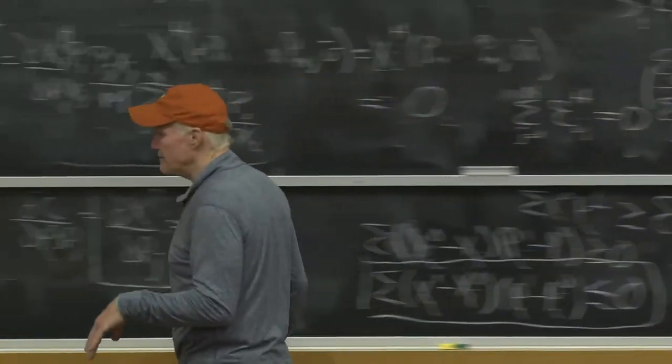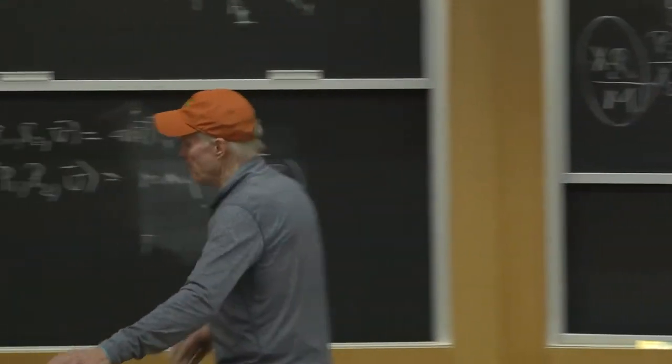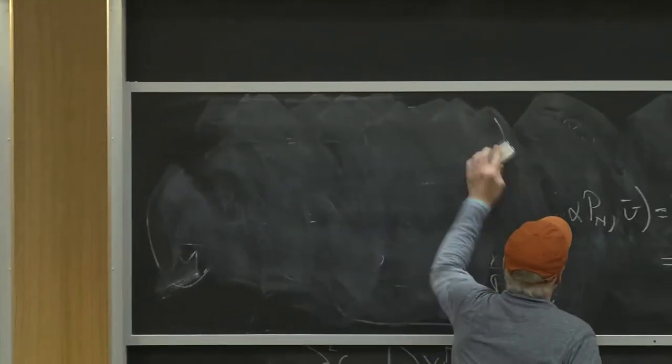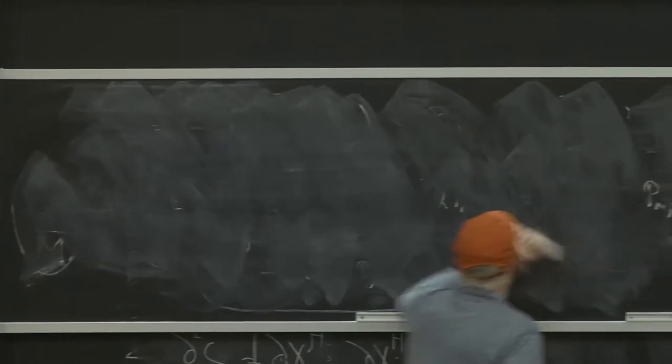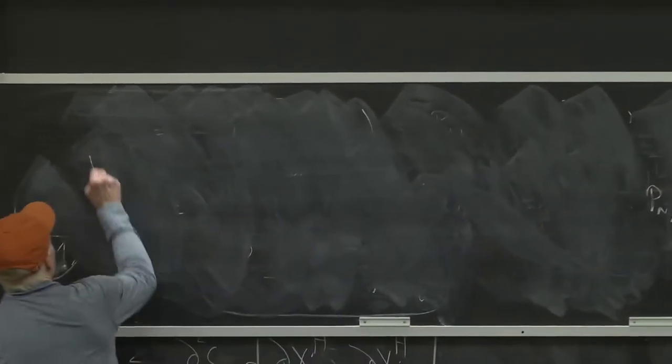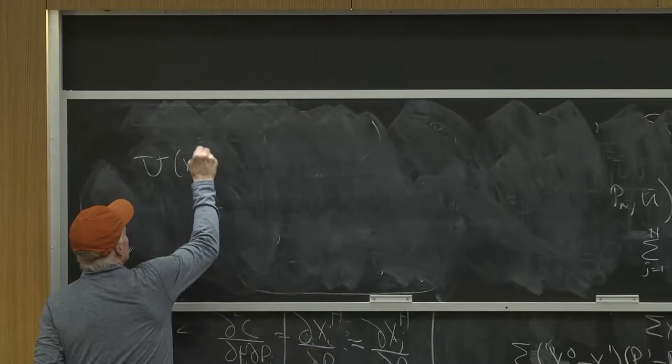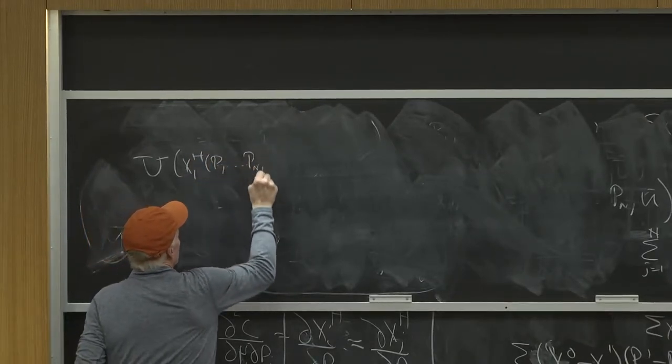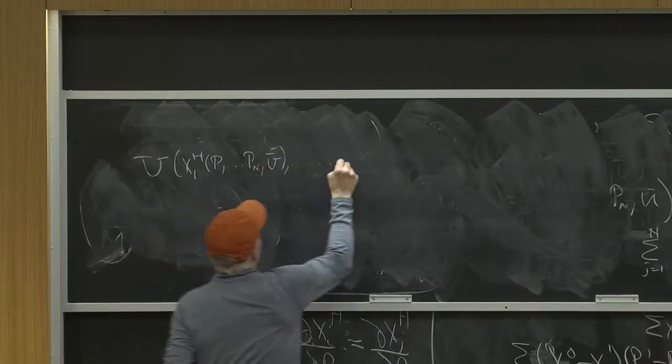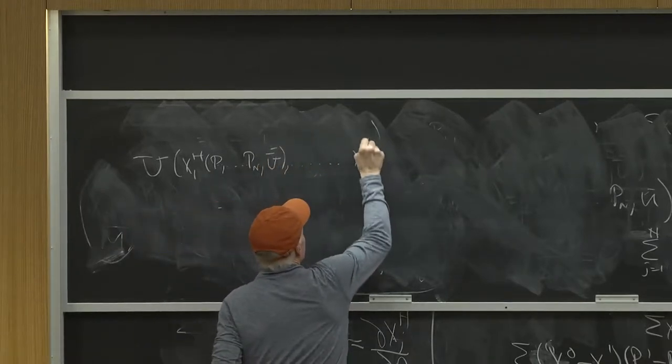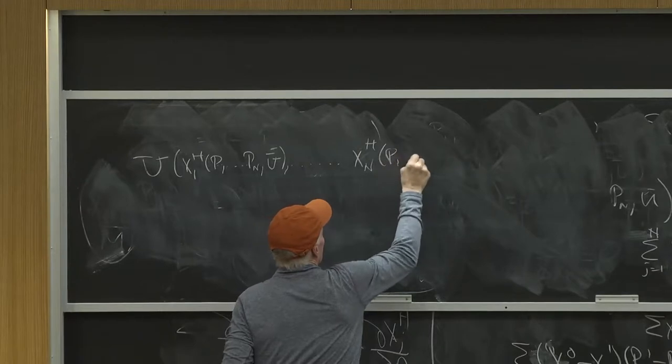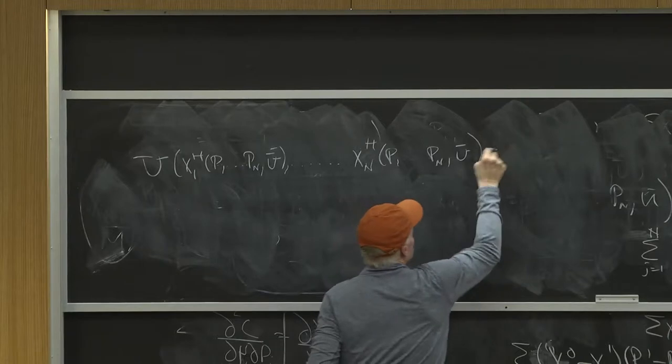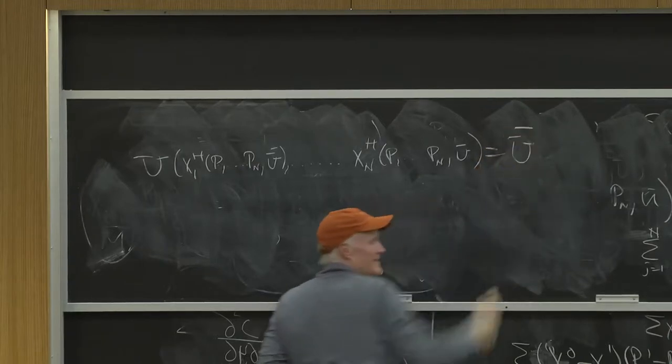So for the Hicksian demand curve, u of x1h of p1 up to pn u bar, comma dot dot dot xnh of p1 up to pn u bar has to be equal to u bar. That's got to be true.